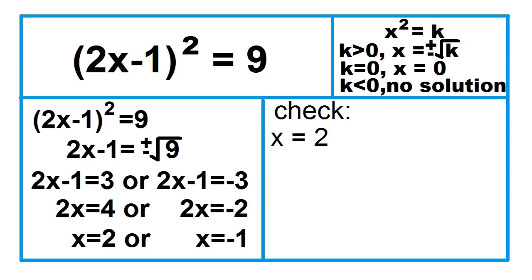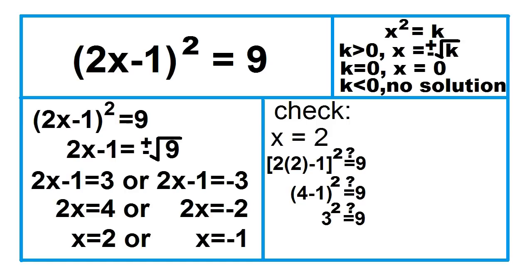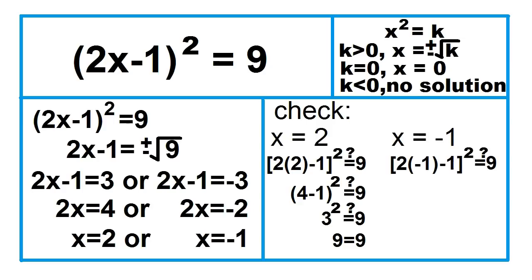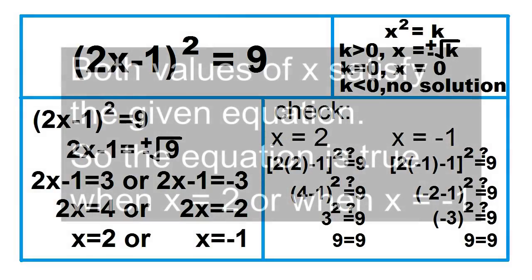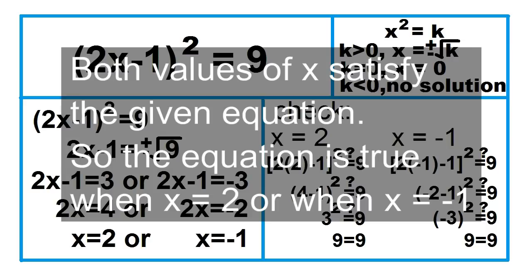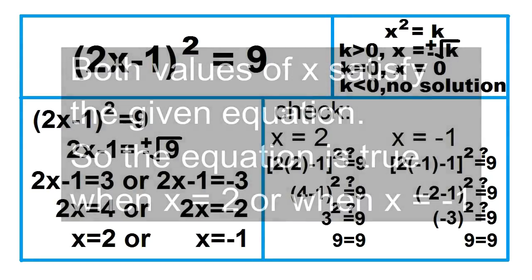Let's check. For x equals 2: is the square of the quantity 2 times 2 minus 1 equal to 9? Is the square of the quantity 4 minus 1 equal to 9? For x equals negative 1: is the square of the quantity 2 times negative 1 minus 1 equal to 9? Is the square of the quantity negative 2 minus 1 equal to 9? Is the square of negative 3 equal to 9? Yes, 9 equals 9. Both values of x satisfy the given equation, so the equation is true when x equals 2 or when x equals negative 1.